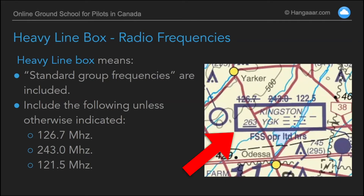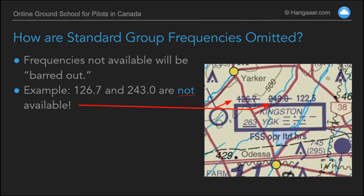Wherever you see this symbol — the heavy line box — it includes what they call standard group frequencies, and the standard group frequencies are available unless they're crossed out. The standard group frequencies include 126.7 MHz VHF, 243.0 which is a UHF military frequency, and 121.5. We can see here at Kingston that 126.7 and 243.0 are crossed out — not available at Kingston even though they would be standard.